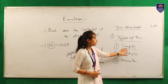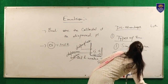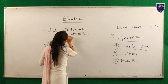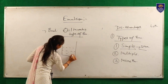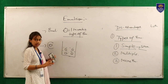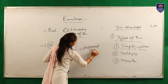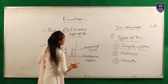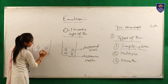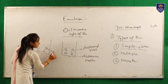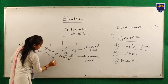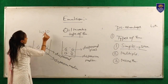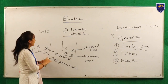Here is the diagram showing the types of simple emulsion. In oil-in-water emulsion, the dispersed phase is oil and water is the dispersion medium. In water-in-oil emulsion, it is the opposite — water is the dispersed phase and oil is the dispersion medium.